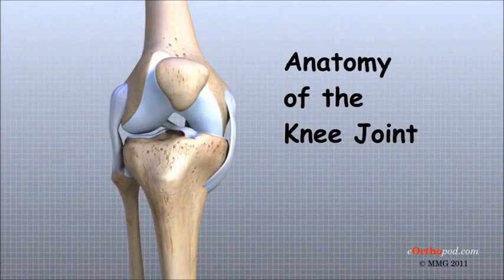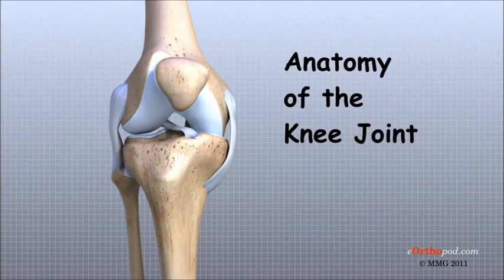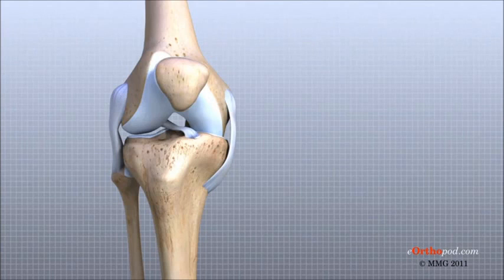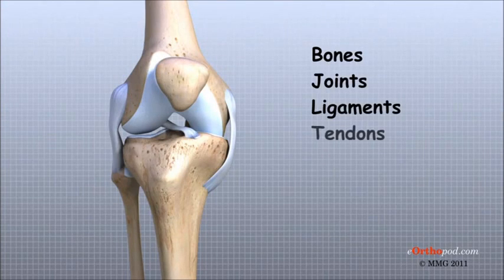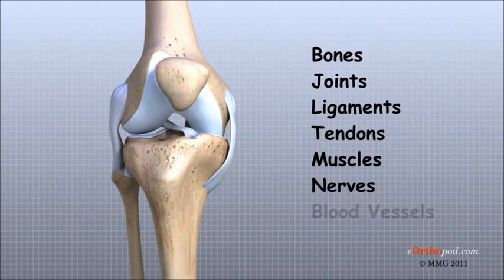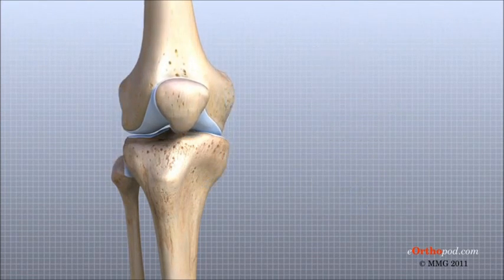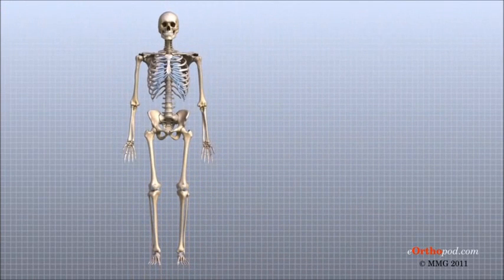A well-functioning knee joint is critical to mobility, including standing, walking, and running. To better understand how knee problems occur, it is important to understand some of the anatomy of the knee joint and how the parts of the knee work together to maintain normal function. The important structures of the knee can be divided into several categories: bones, joints, ligaments, tendons, muscles, nerves, and blood vessels.